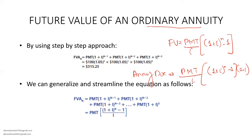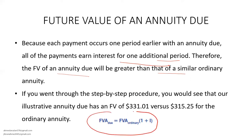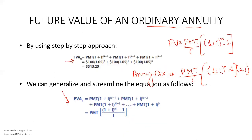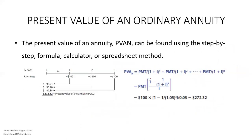In the step-by-step approach, you just put in the values and use the same formula to get your answers. Each payment occurs one period earlier with an annuity due, so all payments are invested for an additional period. Therefore, the future value of an annuity due will generally be greater than that of a similar ordinary annuity. As shown, substituting the values into the formula gives FV = PMT × [(1 + i)^N − 1] / I × (1 + i) for annuity due.